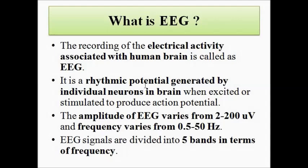The potential generated in individual neurons is called the electroencephalogram. EEG also follows the same concept of generation of electric potential through resting potential and action potential — that concept is the same. The EEG is the electric potential generated because of the distribution or redistribution of opposite charges, cations and anions, in each individual neuron.